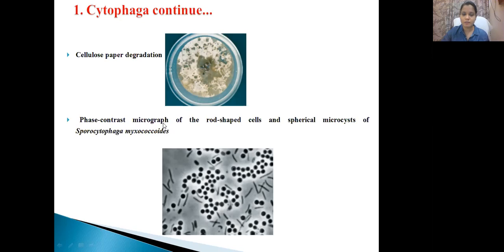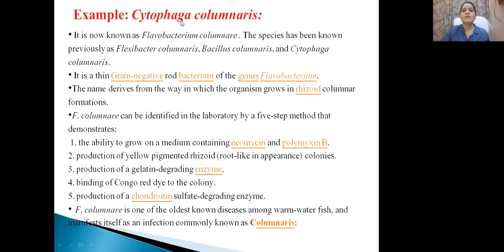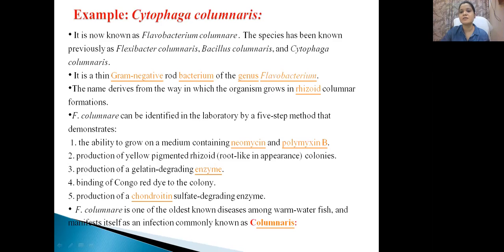If you see through a phase contrast microscope, you can see rod-shaped vegetative cells, and under dormant conditions these organisms can form cysts or spherical spore-like structures under unfavorable conditions. Now we will focus on Cytophaga columnaris in detail. This bacteria is also called Flavobacterium columnare. Initially it belonged to Flexibacter species but now it is under Cytophaga columnaris. It is a gram-negative, rod-shaped bacterium of the genus Flavobacterium. The name derives from the way the organism grows — it shows a thread-like or root-like appearance, hence called rhizoid.